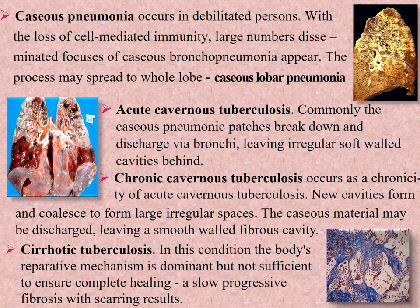Acute cavernous tuberculosis: commonly the caseous process patches break down and discharge via bronchi, leaving irregular soft-walled cavities behind, containing a variable amount of caseous mass. Due to discharging of active bacilli with sputum, these patients are much more socially dangerous. Chronic cavernous tuberculosis occurs as chronicity of acute cavernous tuberculosis. New cavities form and coalesce to form large irregular spaces. The caseous material may be completely discharged, leaving a smooth-walled fibrous cavity, with perifocal emphysematous foci as the lesion extends.